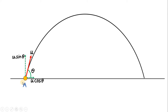Suppose a particle is thrown from the ground with velocity u at an angle theta with the horizontal. We resolve the initial velocity into horizontal and vertical components: u cos theta and u sin theta. Remember that whichever component makes angle theta with respect to the vector will be the cosine component, and the other component making 90 minus theta will be the sine component.